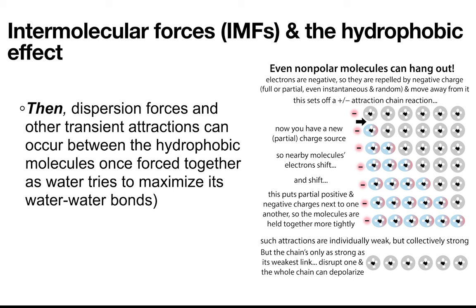If I said spread yourselves randomly about the room, you'd probably spread out evenly. But true randomness involves clumps — those hot streaks where you get ten heads in a row when flipping a coin. Similarly, electrons can hang out in one place more than another, just randomly. And this will set off that chain reaction.